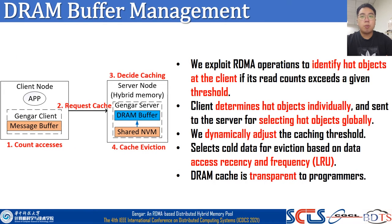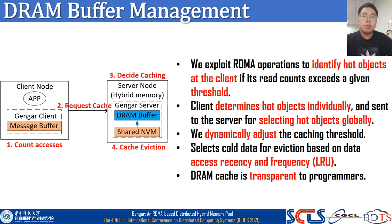As one-sided RDMA operations are not perceived by the remote server's CPU and OS, it is hard to monitor data accessed at the server side. Gengar can exploit the symmetry of RDMA read operations to identify hot objects at the client side. Each Gengar client determines hot objects individually, then reads the counter of each object and sends it to the server for selecting hot objects globally. We dynamically adjust the threshold of hot data according to DRAM utilization and the benefit of DRAM caching. Gengar selects cold data for eviction based on data access recency and frequency, and the hot data caching is performed solely by Gengar without involvement of client applications.